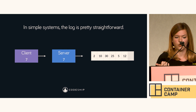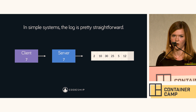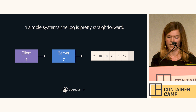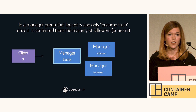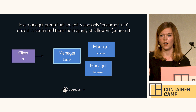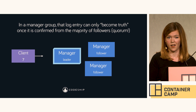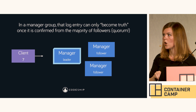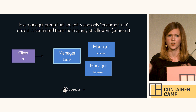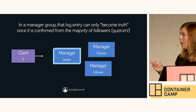This is where distributed state gets dicey. What happens when I make a request and one node performs some action — how do the other nodes know? The answer is through the logs. In a simple system with one node, things are straightforward: a request says x should get seven, the server sets x to seven, and we append it to the log. In a group with multiple managers, how do we know if x can get seven? What if one manager has a different value? Something can only become truth when the cluster has quorum and managers can all vote and say yes, x can get seven.